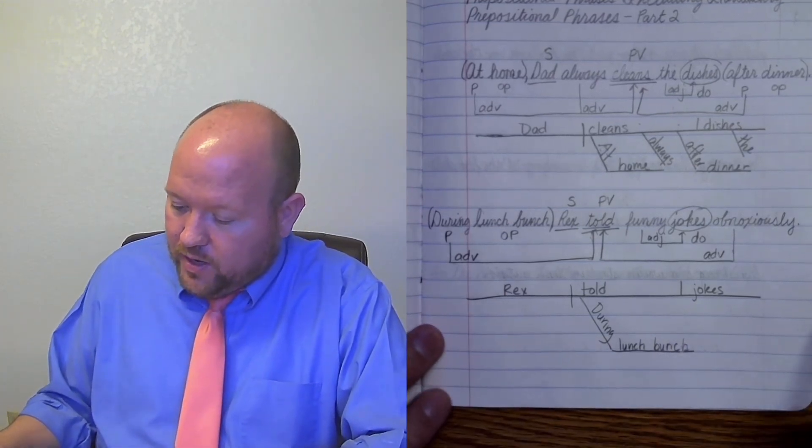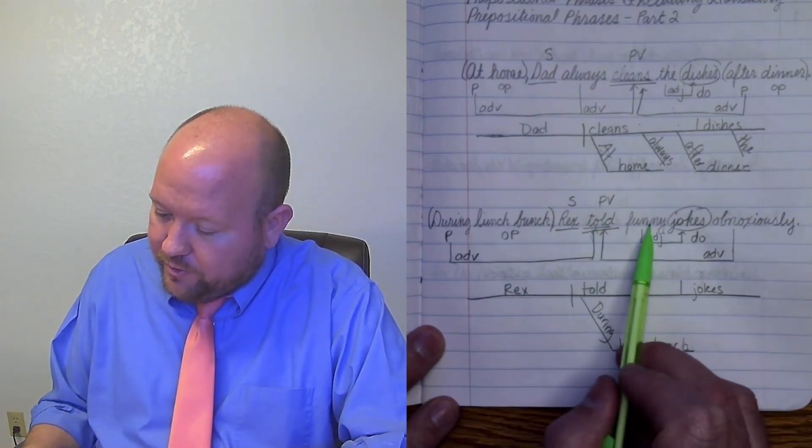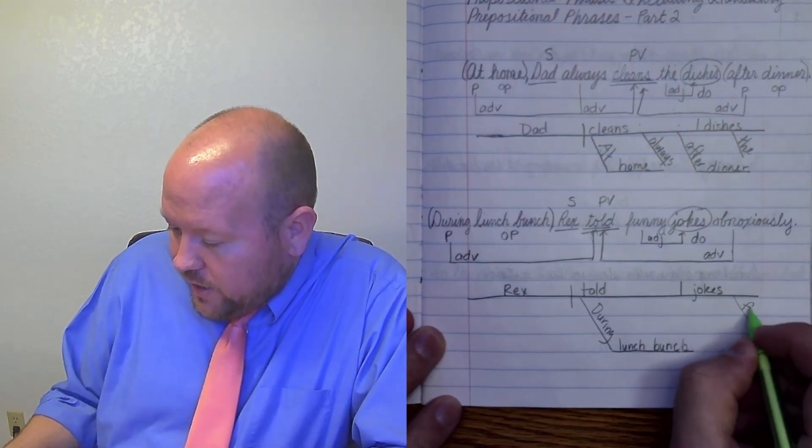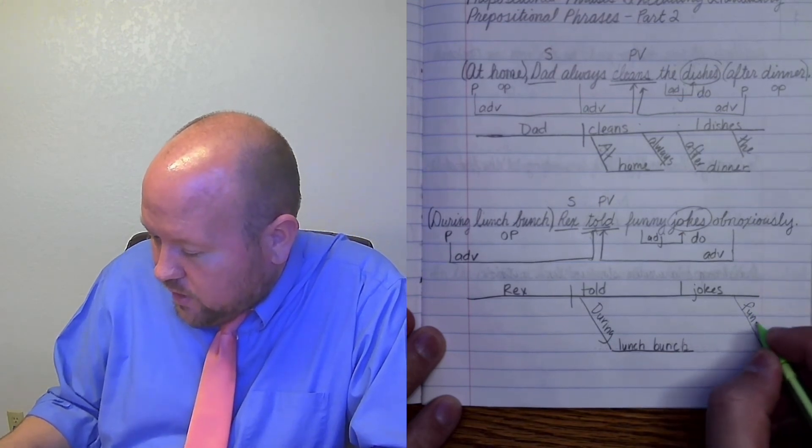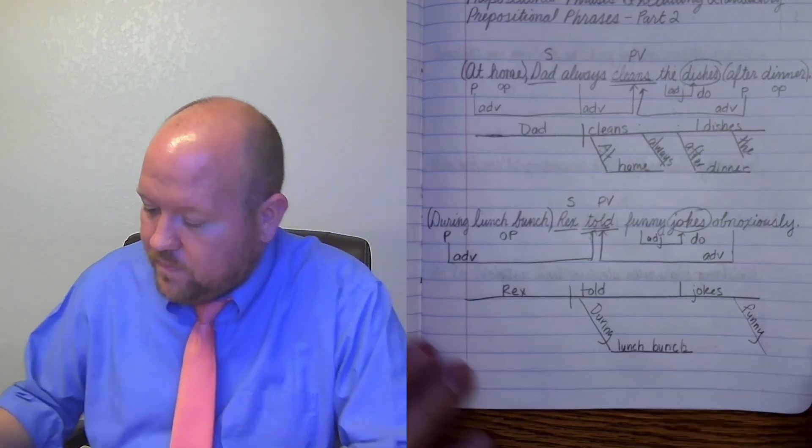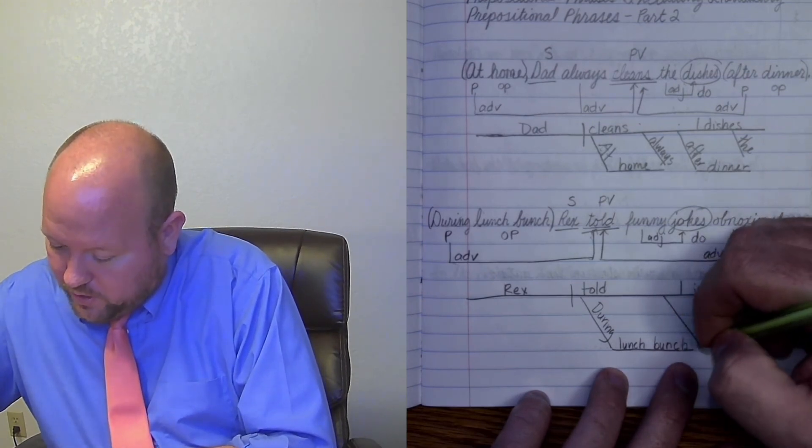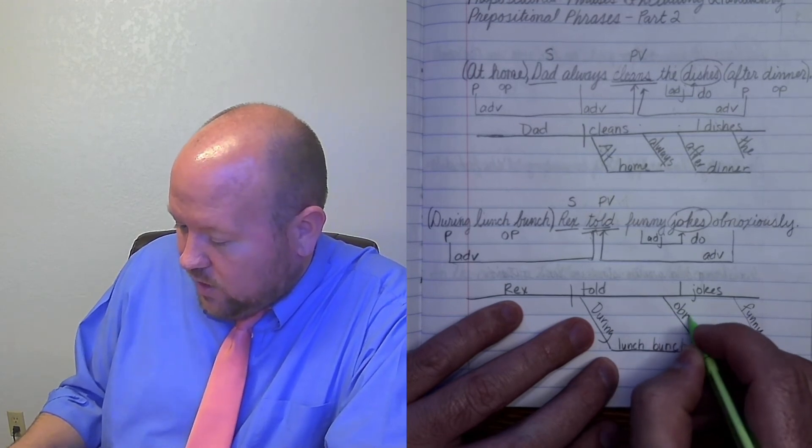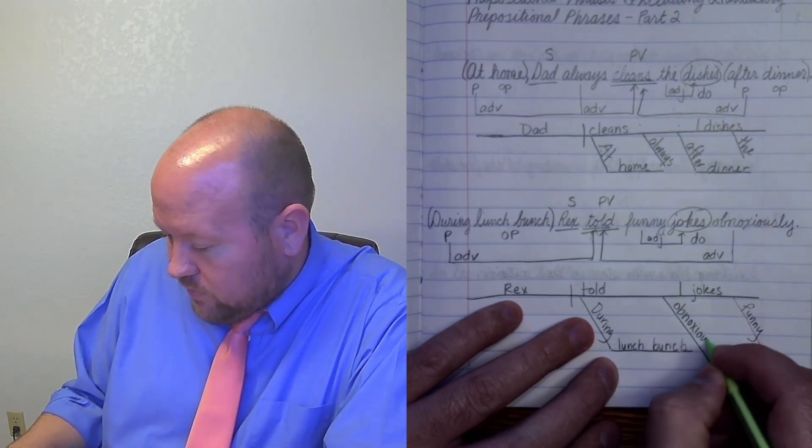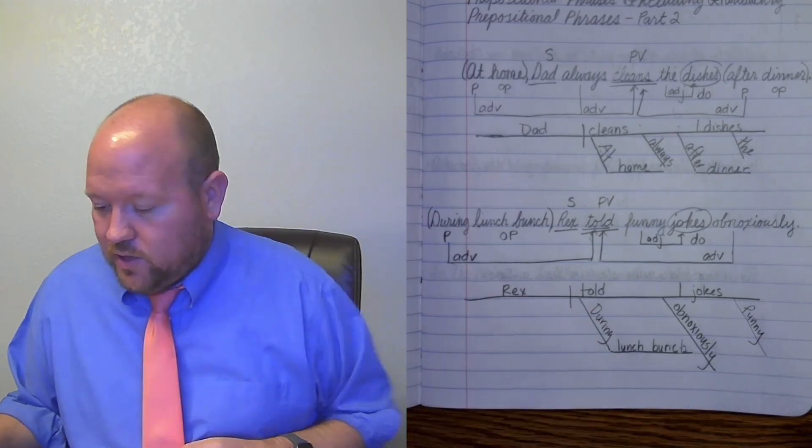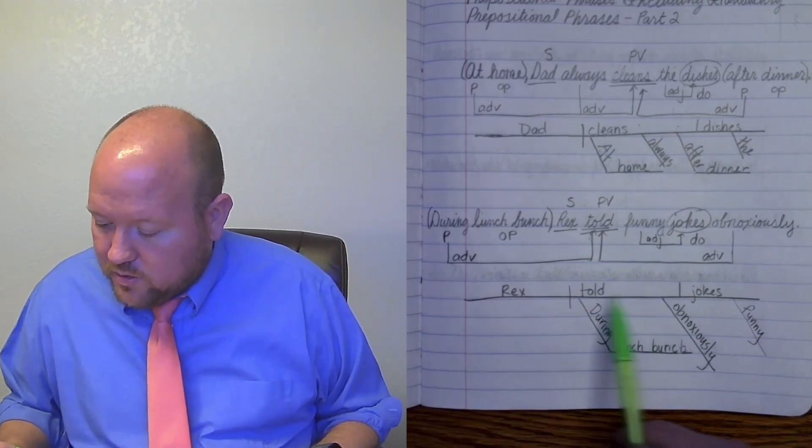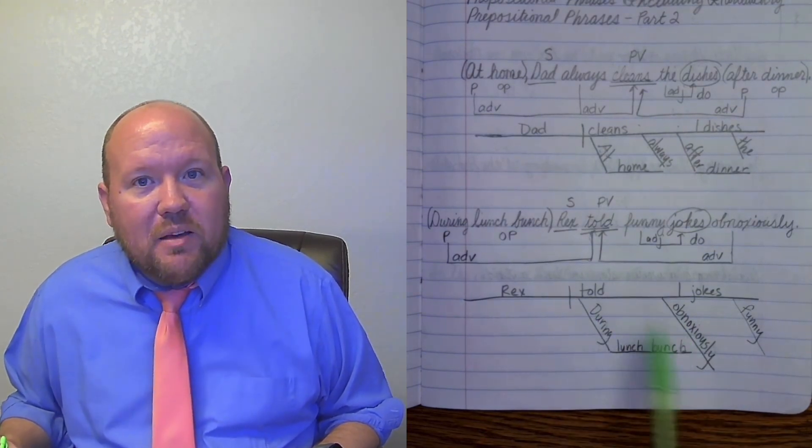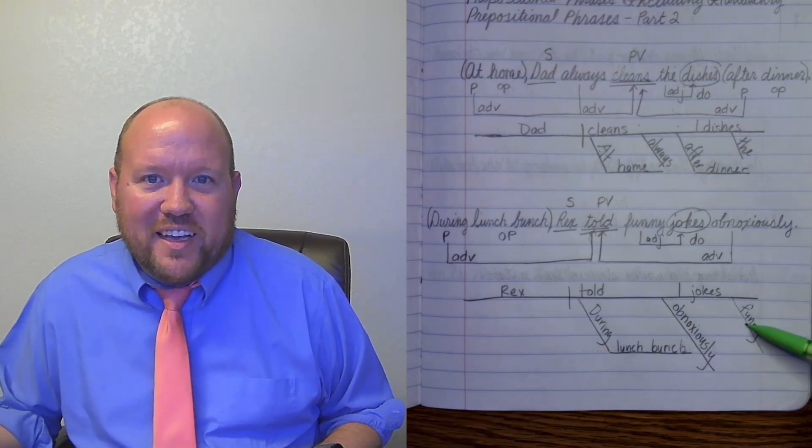Rex, we've already dealt with. Told, we've already dealt with. Funny. Funny is modifying jokes. So here it'll be funny. And I'm scooting this all the way over because I know I'm gonna have to fit another word in there underneath, told. And that is the word obnoxiously. It means to do it crazy or do it in an odd way. Obnoxiously. And so Rex told jokes. He told jokes during lunch bunch. He told them obnoxiously, but thankfully the jokes are funny.